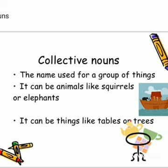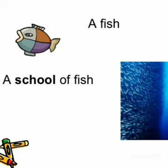It can be animals like squirrels, elephants, lions, cows. It can be things like tables, trees, fruits, flowers, etc. Now, let us understand it better with some more examples.